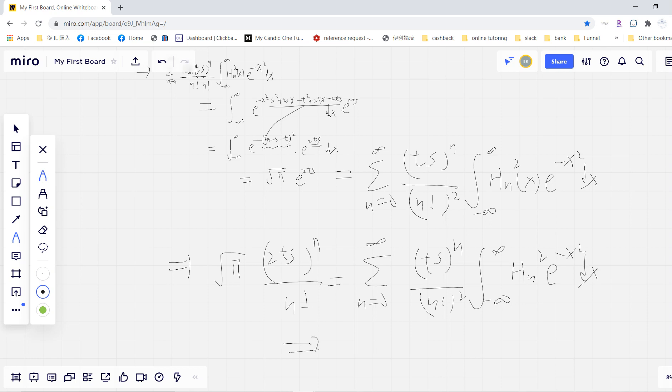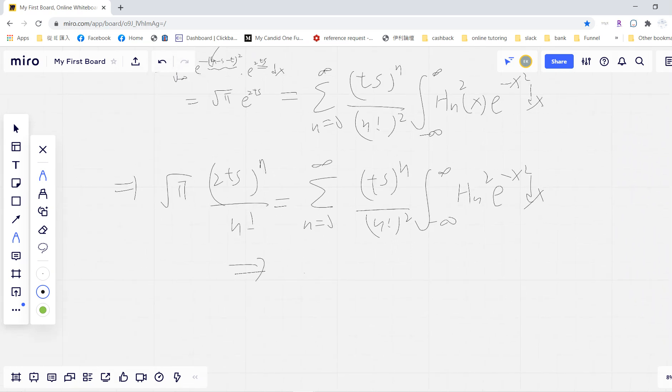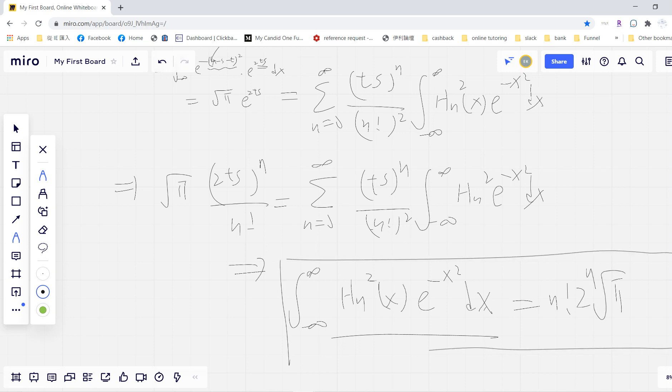Okay, so comparing it, we finally get the Hermite polynomial orthogonality constant is basically n! times 2^n times square root of pi.